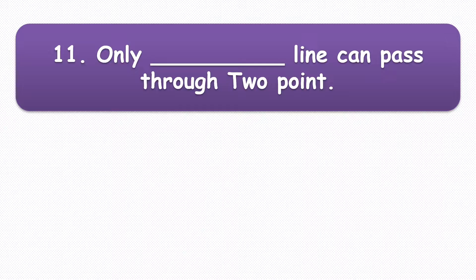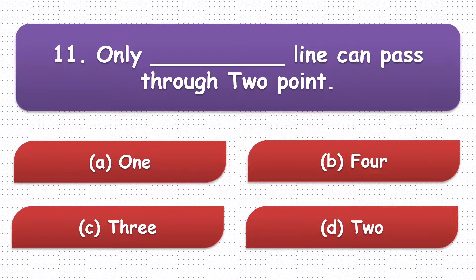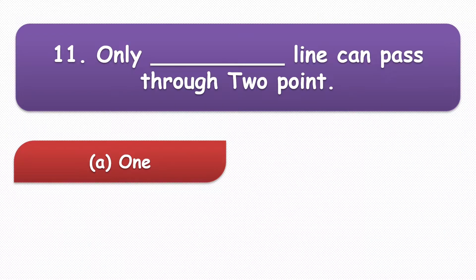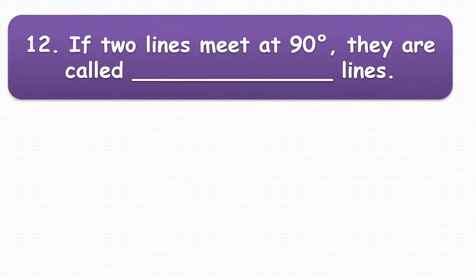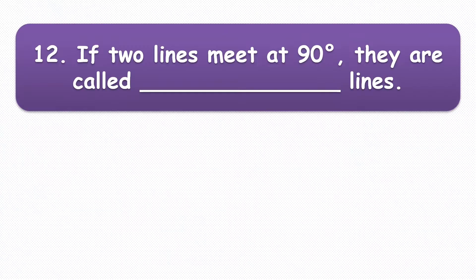Next question: only blank line can pass through two points. The options are one, four, three, two. The answer is one.